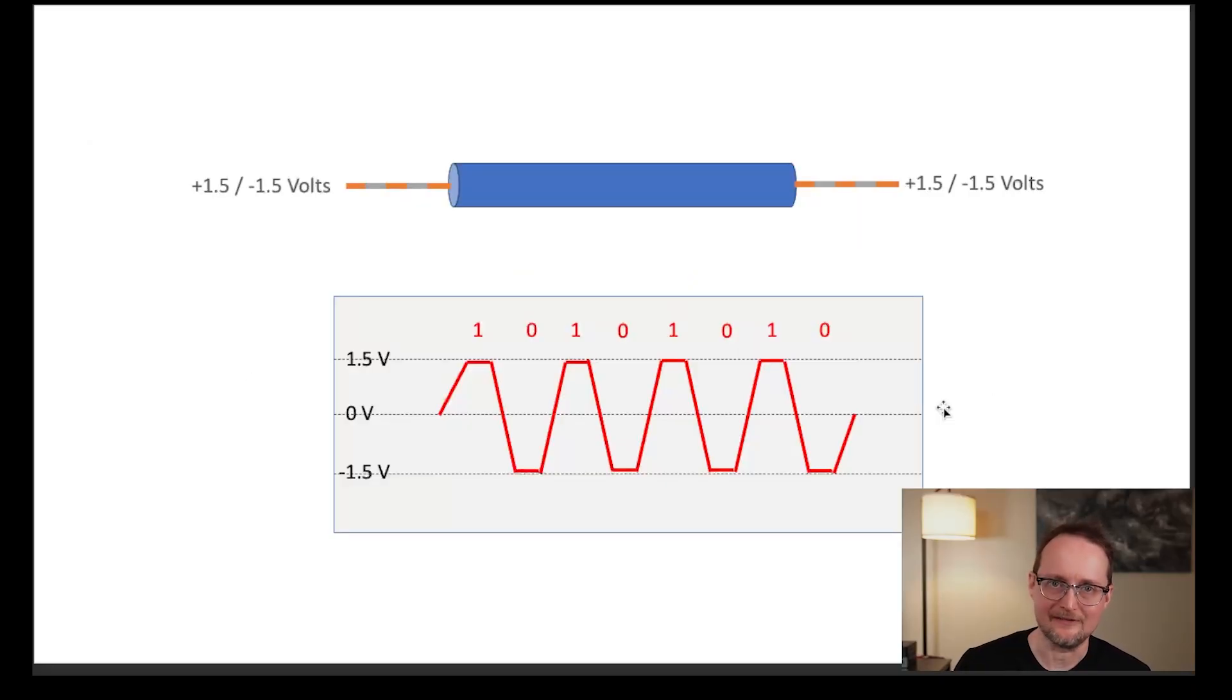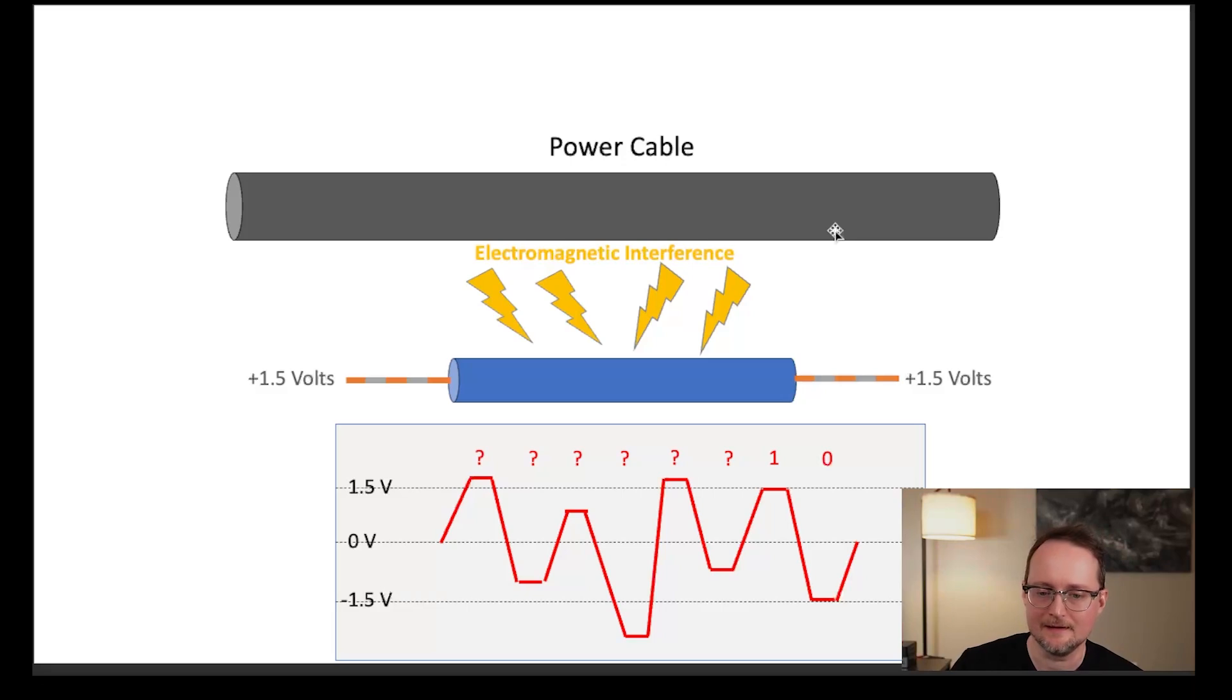And again, this is what a clean signal looks like using a single wire as a signal. The receiving computer is able to easily determine if it's receiving a one or a zero based on the voltage. And this is a very exaggerated view of the voltage with electromagnetic interference. You can see the voltage has jumped around and the receiving side is having a hard time determining if the bits are a one or a zero.